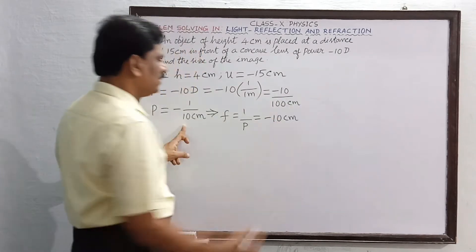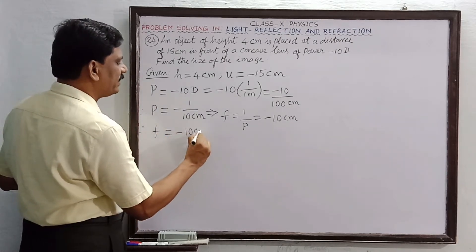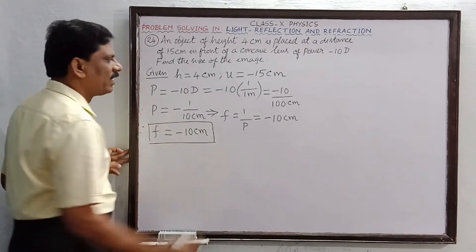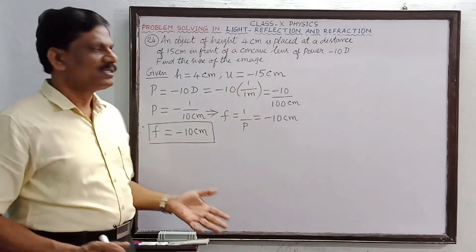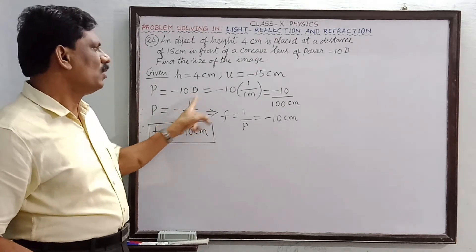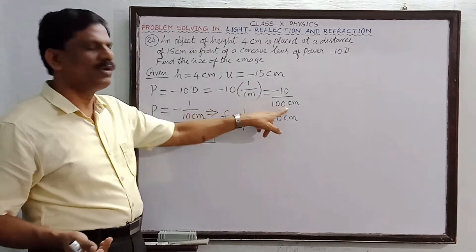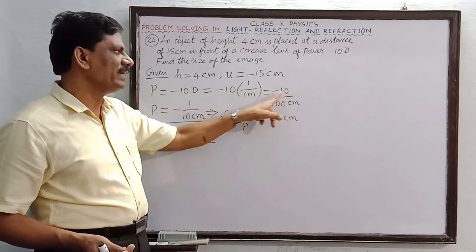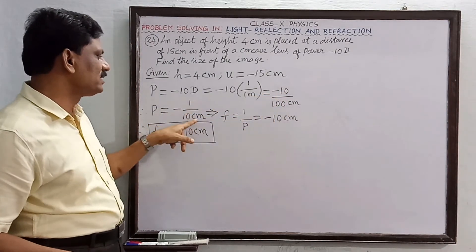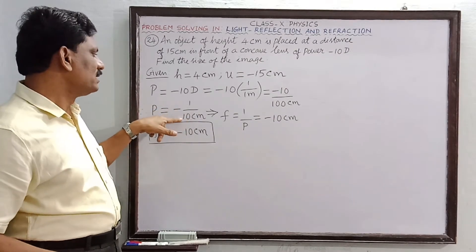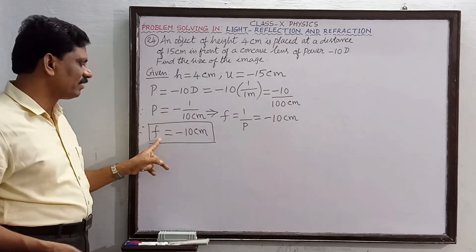So the focal length of the lens is minus 10 centimeter. Students often struggle to convert diopter into centimeter. One diopter is the reciprocal of one meter. That one meter can be converted into 100 centimeters. Since it is minus 10 diopter, it becomes minus 10 divided by 100 centimeter, which equals minus 1 divided by 10 centimeters. Therefore focal length equals minus 10 centimeter.